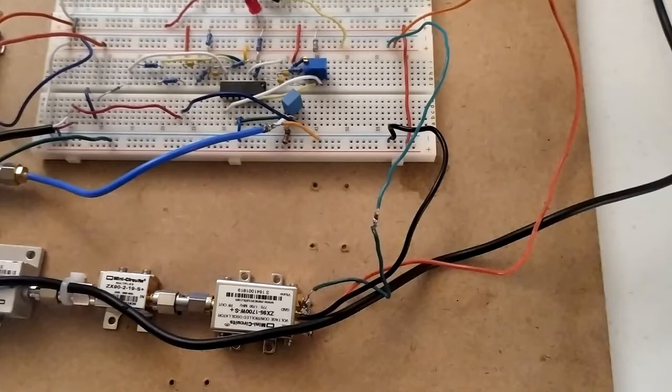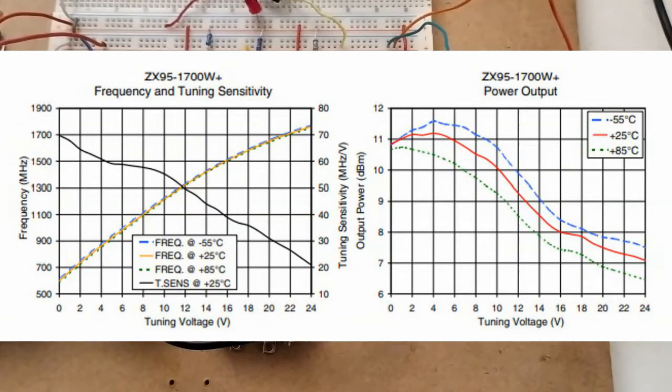For VTune, if we take a look at the performance sheets, we see that adjusting VTune will output a different frequency. So right now I have 12V going into VTune which corresponds to approximately 1.3GHz.